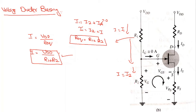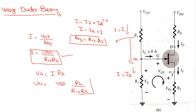To find the voltage drop across R2, which is labeled as Vg, the voltage across R2 is equal to I times R2. Therefore, Vg is equal to Vdd times R2 divided by R1 plus R2. This is Equation 1.